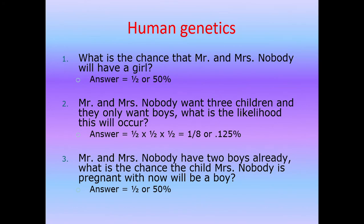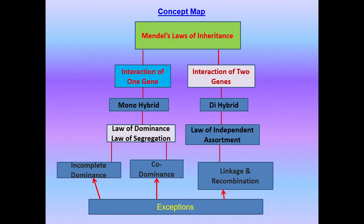Applying this to human genetics: what is the chance that Mr. and Mrs. Nobody will have a girl? At any point it is 50%. If they want three children and all boys, the probability is 1/2 × 1/2 × 1/2 = 1/8, or 12.5% chance that all three are boys. If Mr. and Mrs. Nobody already have two boys, the chance that the next child will be a boy is still 50% — each birth is an independent event. So these probability concepts apply directly to human genetics. When Mendel did experiments with one gene, these are called monohybrid crosses; with two genes, they are called dihybrid crosses.